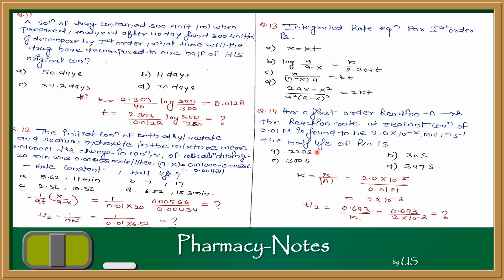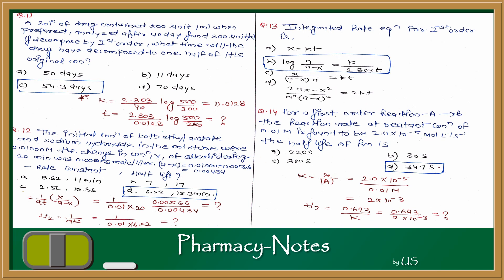Question 14 (last question): for a first order reaction A converted to B, the reaction rate at a reactant concentration of 0.01 molar is found. Find the half-life. First, divide the reaction rate by the molar concentration to get the rate constant k. Then put k into the half-life formula for first order: t½ = 0.693/k. The answer comes out to 3.47 seconds, so the answer is D. I hope all four answers are correct — here are the answers.